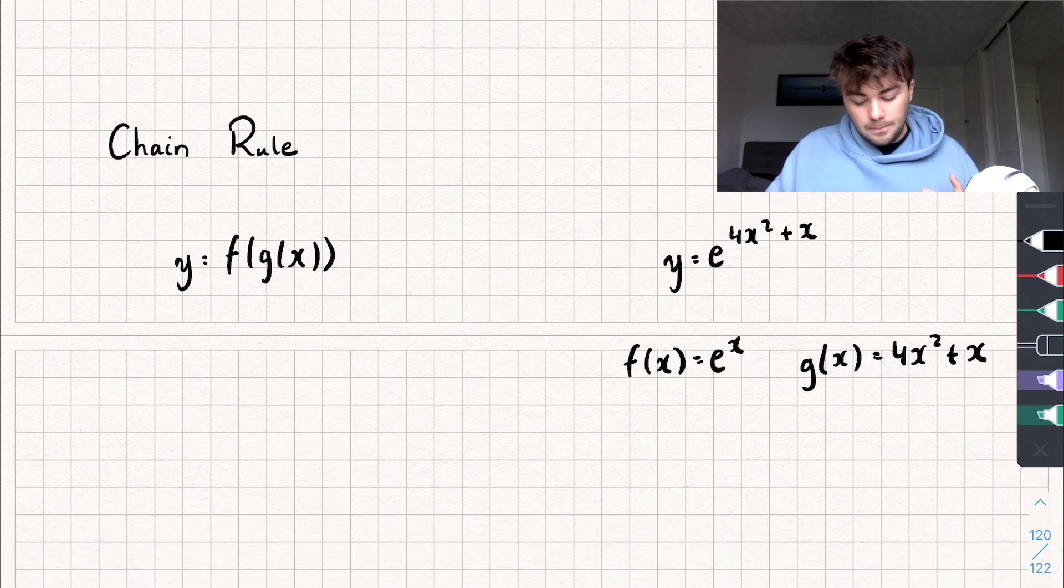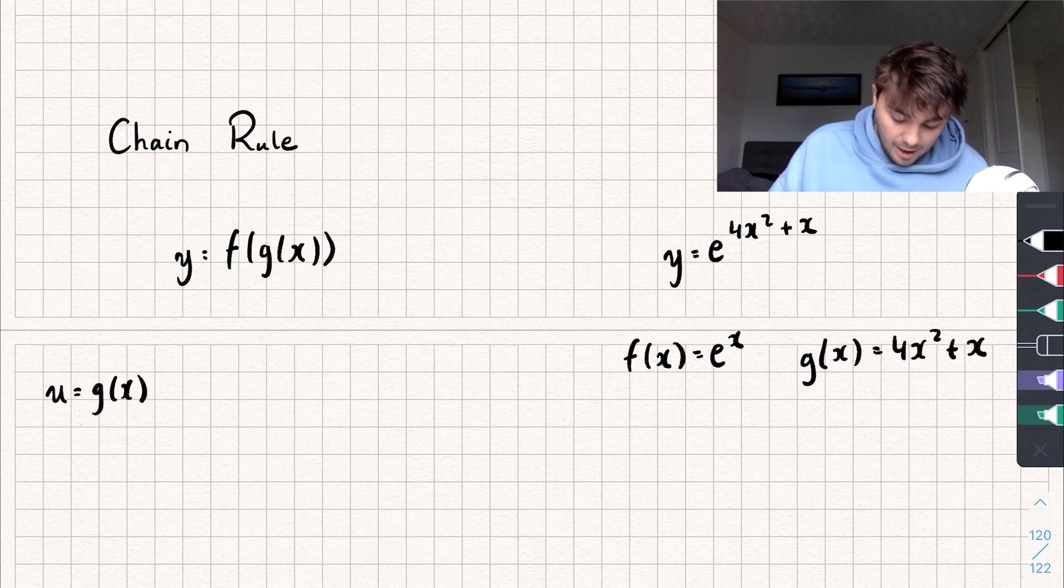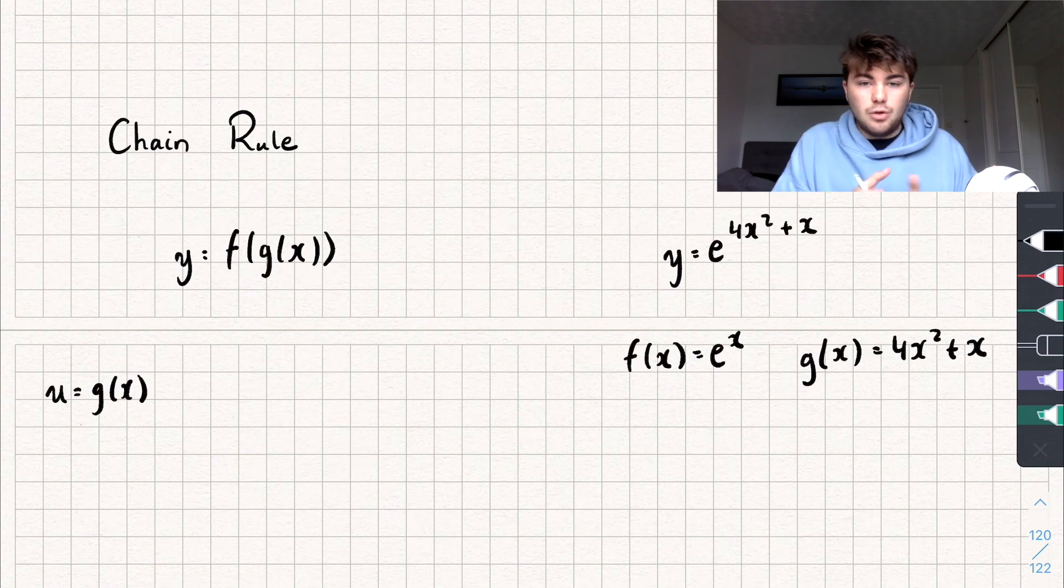And it's pretty easy to do. The way it works is we say, let u equal the function g of x. So we say that u is equal to g of x. And then we get that y is equal to f of u, because u is just g of x.